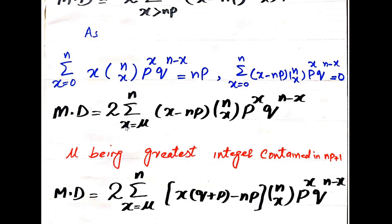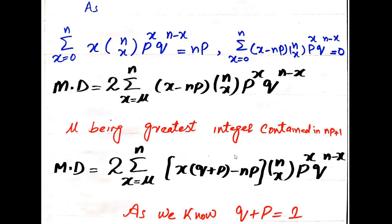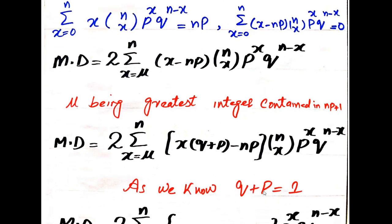So mean deviation equals 2 times the sum from x = μ to n of (x − np) · nCx · p^x · q^(n-x), where μ is the greatest integer contained in np plus 1. Since q + p = 1, we write x = x·(q + p). Then (x − np) becomes (xq + xp − np), which we expand inside the summation.